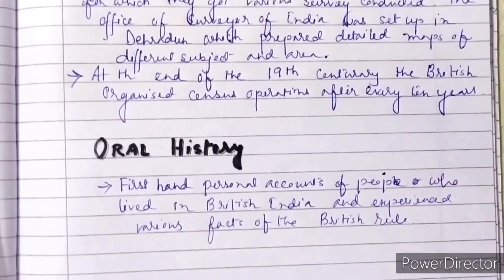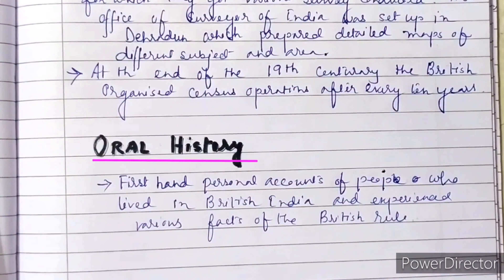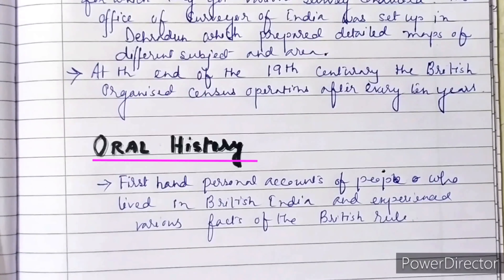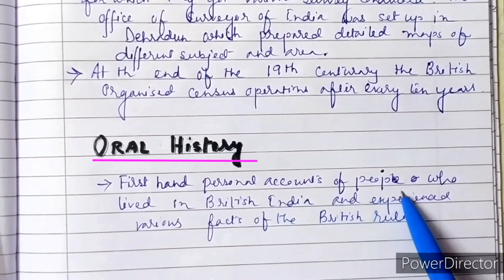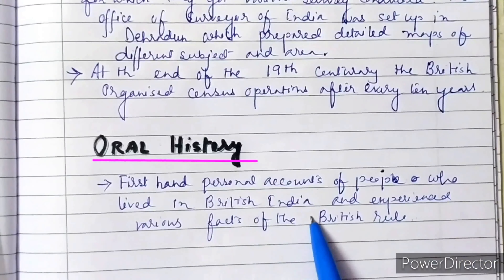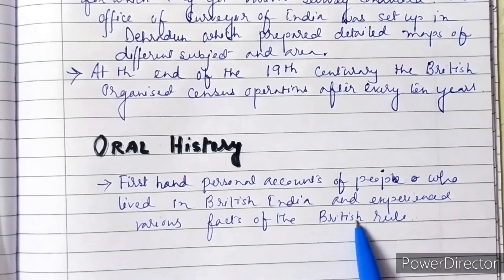Our next topic is oral history. Oral history is the collection and study of historical information from individuals' families or important events. It includes first-hand personal accounts of people who lived in British India and experienced various aspects of British rule.